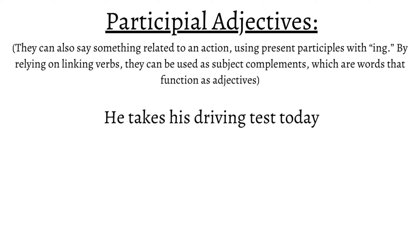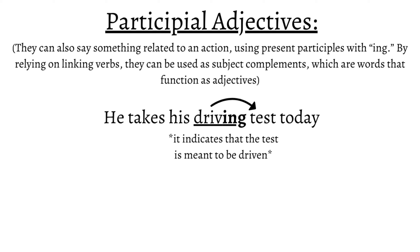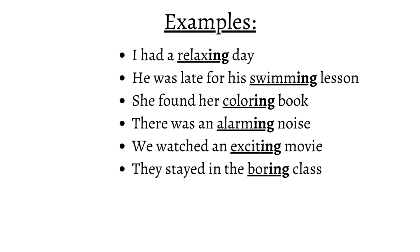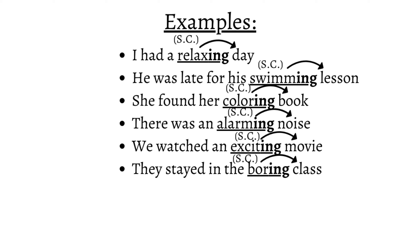For instance, in the phrase "he takes his driving test today", the word "driving" is the participial adjective that modifies the noun "test", indicating that the test is meant to be driven. Despite this form using "-ing", this present participial adjective is simple to recognize because it's placed before nouns. Other examples are: "I had a relaxing day." "He was late for his swimming lesson." "She found her coloring book." "There was an alarming noise." "We watched an exciting movie." "They stayed in the boring class." In these sentences, the adjectives are still participial, so they're positioned formally.